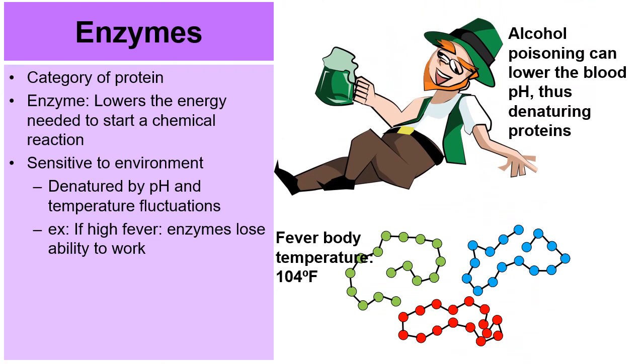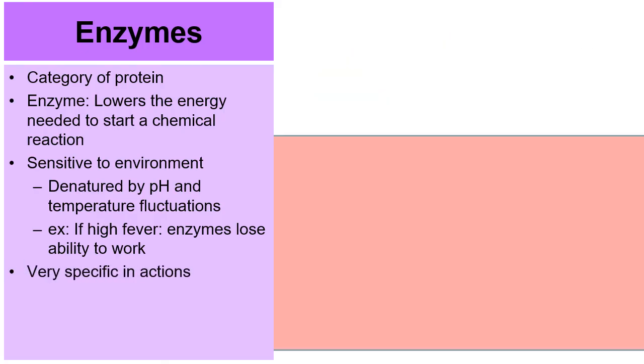Another is alcohol poisoning can lower the pH in our bloodstream. And that can denature the proteins that are floating around suspended in the bloodstream. Enzymes are very specific in their actions.